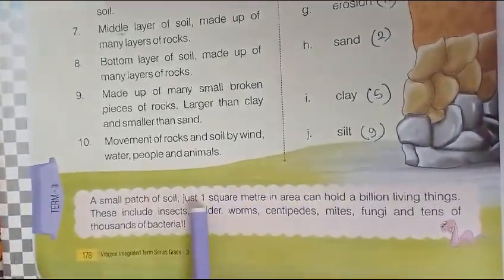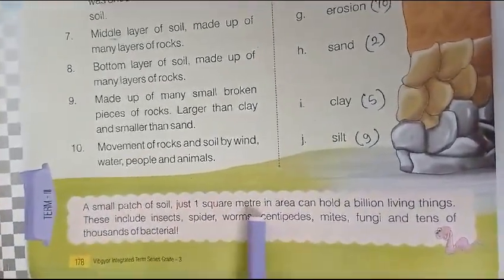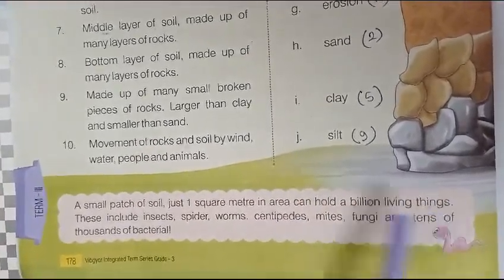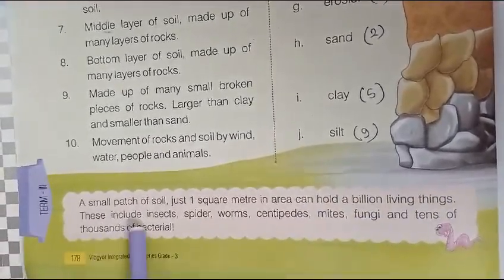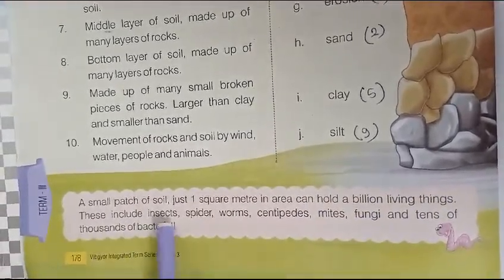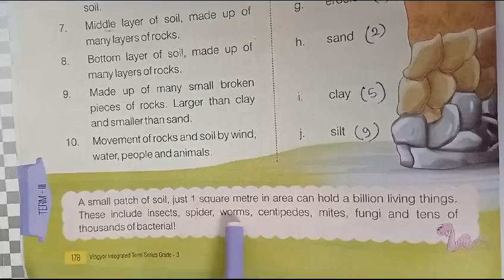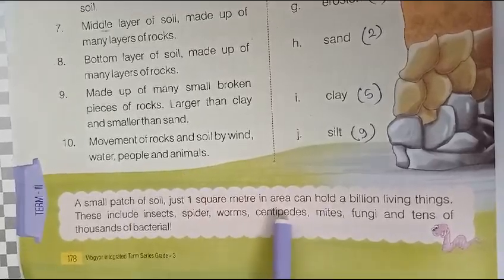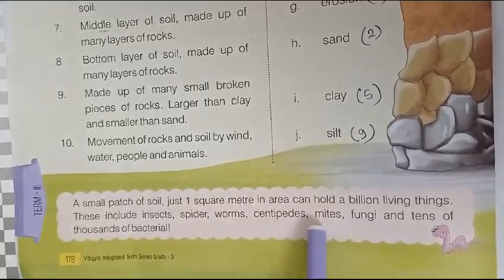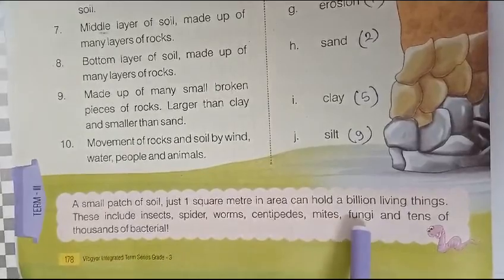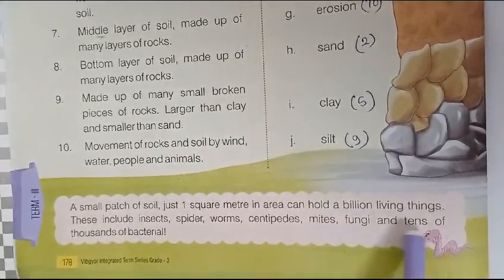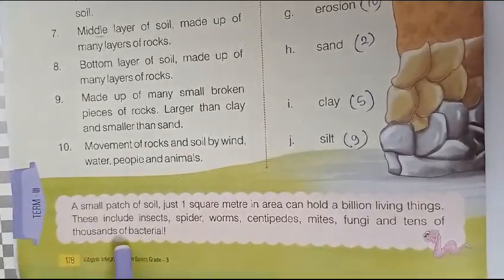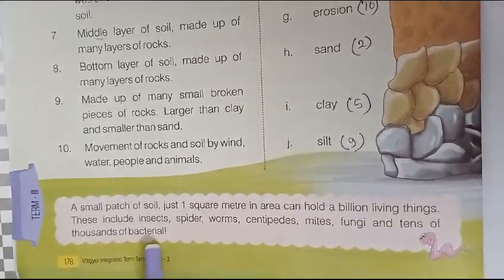A small patch of soil — just one square meter in area — can hold a billion living things. These include insects, spiders, worms, centipedes, mites, fungi, and tens of thousands of bacteria.